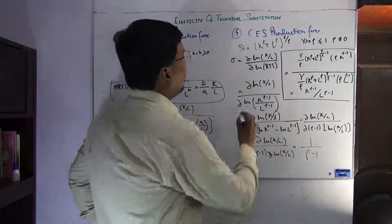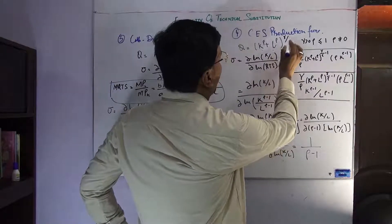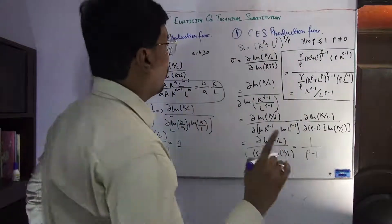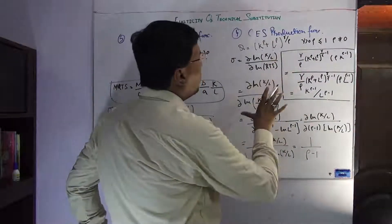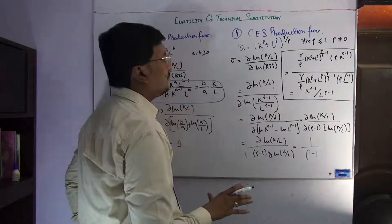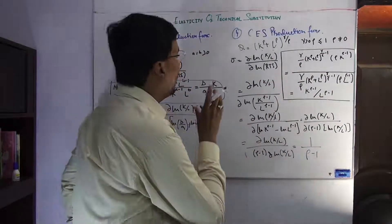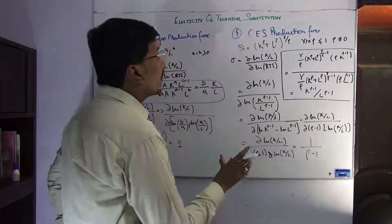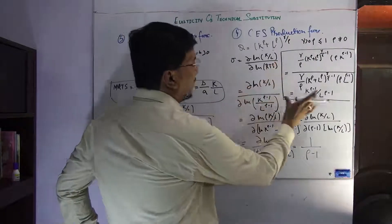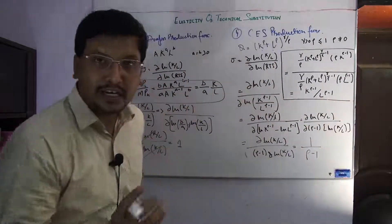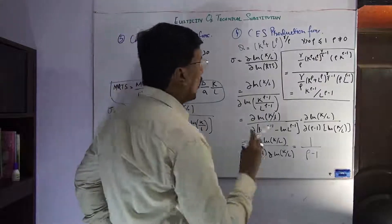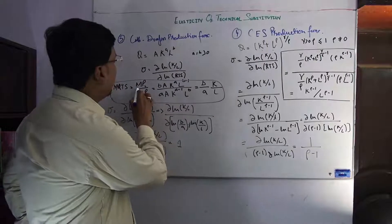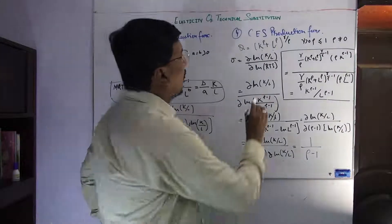Now we move on to the CES production function. The CES production function takes the form (K^ρ + L^ρ)^(γ/ρ). We apply the same approach, but this is a more complex function in terms of calculating the RTS. We calculate the RTS separately using the marginal productivity of labor and the marginal productivity of capital.